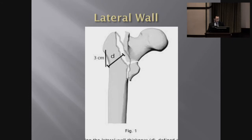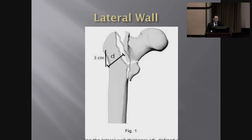A few words about the lateral wall — its integrity from the greater trochanter down to the shaft is important, particularly when selecting your implant. When the lateral wall is intact, you can use a dynamic compression screw or sliding hip screw safely because it provides the needed fixation. If the lateral wall doesn't exist or there's no continuity, you should think twice about using that implant because the likelihood of failure increases.